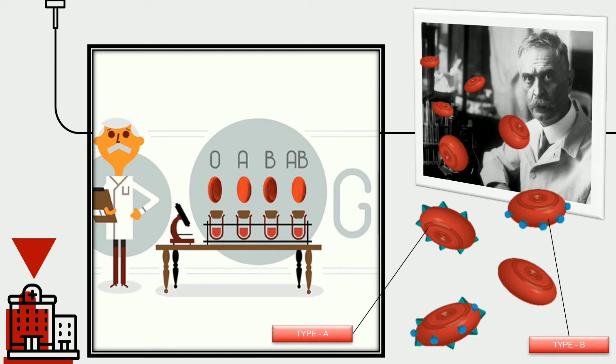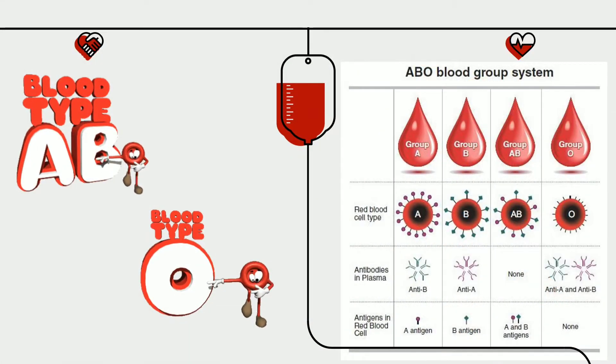Blood containing type A antigen was classified as group A, while that containing type B antigen as group B. Subsequently, it was discovered that the blood of some people contains both A and B type antigens, classified as group AB. The blood that contained neither A nor B type antigens was called group O. Thus, the blood groups of all human beings have been divided into four groups.